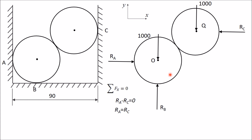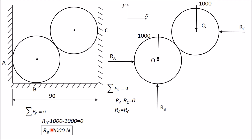Next, apply ΣFY = 0. The forces along the Y direction are RB (upward, positive) and the two 1000 Newton weights (downward, negative). The equation becomes RB minus 1000 minus 1000 = 0, so RB = 2000 Newton directly.